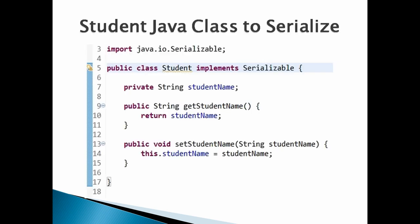Let's create a Java class by the name Student. In order to make the Student class serializable, it must implement the Serializable interface. It has a property called studentName along with its getters and setters.